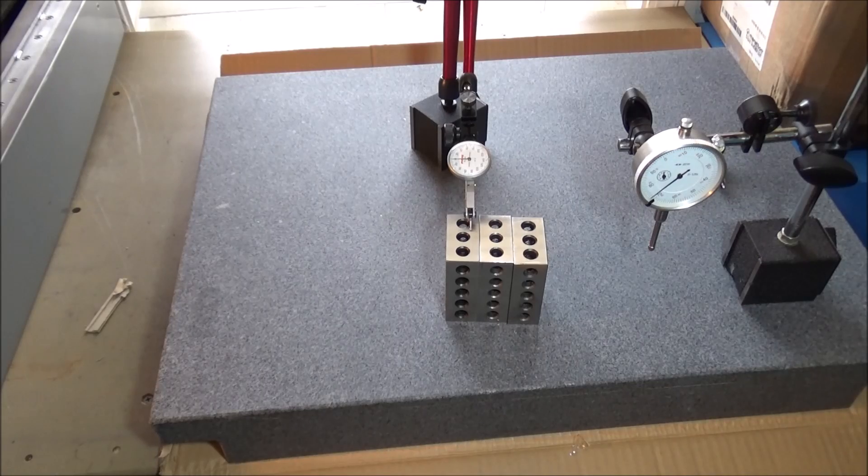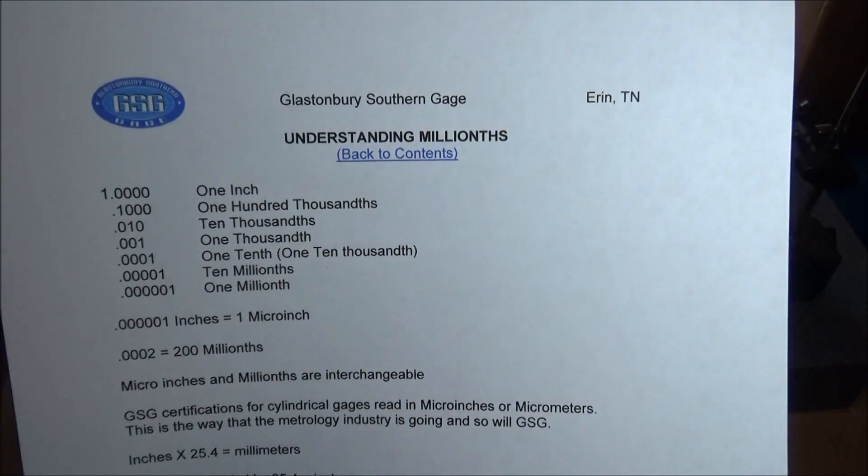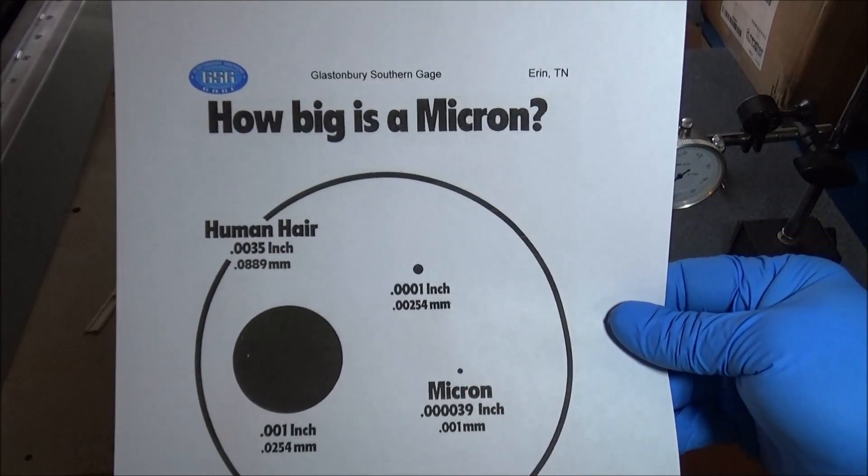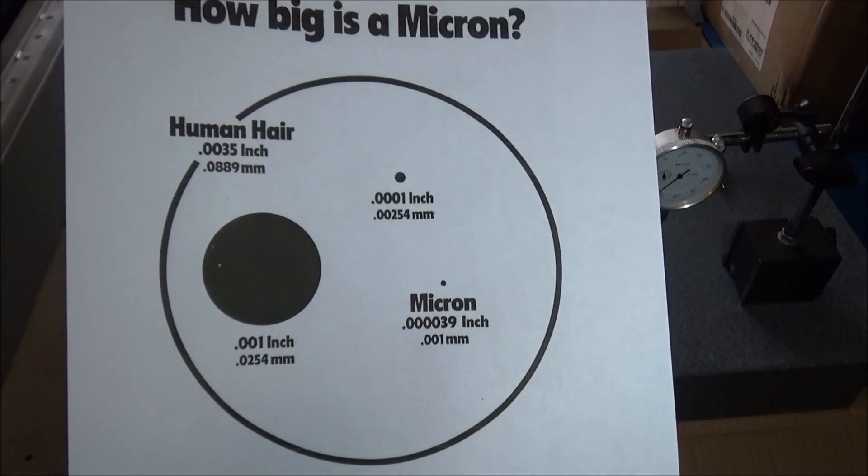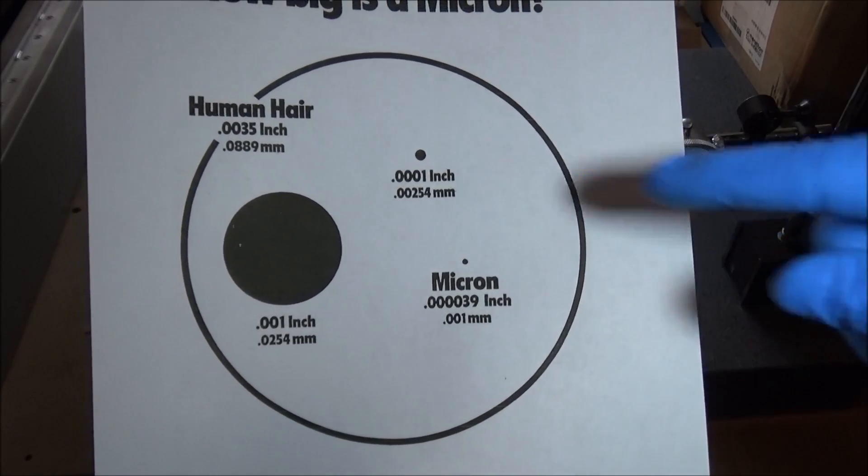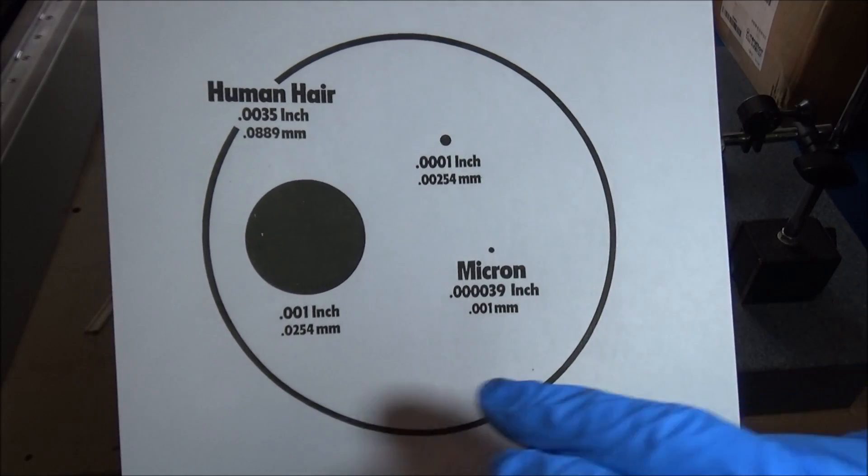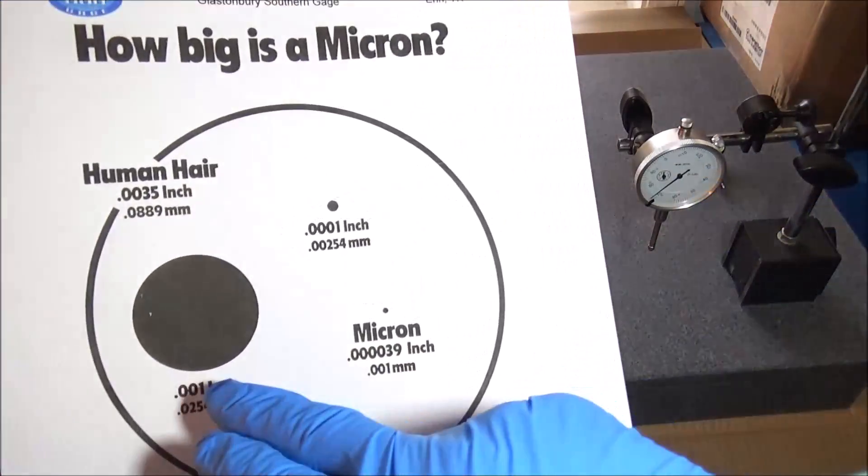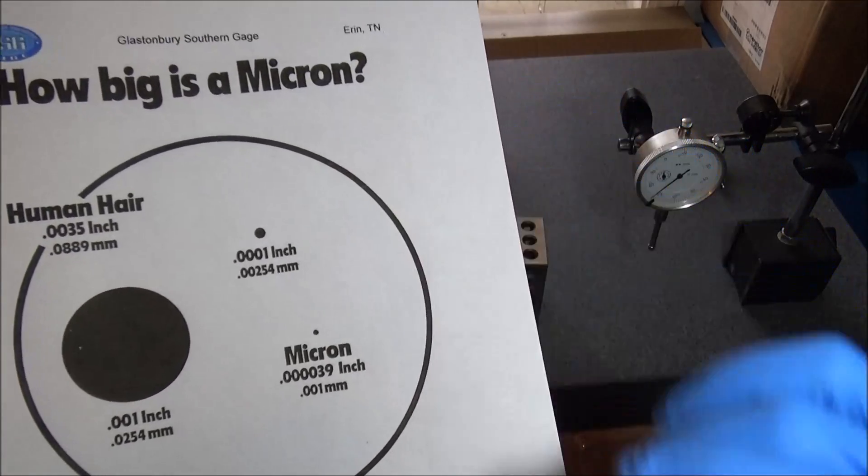How big is a micron? That's where I got confused. When I found this information on the internet it put it all into perspective. Page two shows this outside circle representing a human hair, about three and a half thousandths of an inch. Over here is a thousandths of an inch, so that's what this gauge measures - about a thousandth of an inch, which in comparison to a human hair is quite a bit smaller.